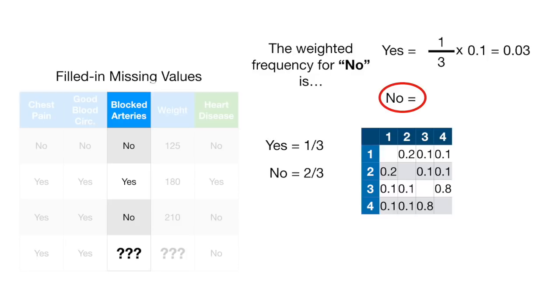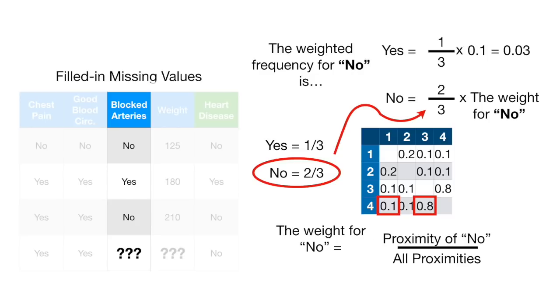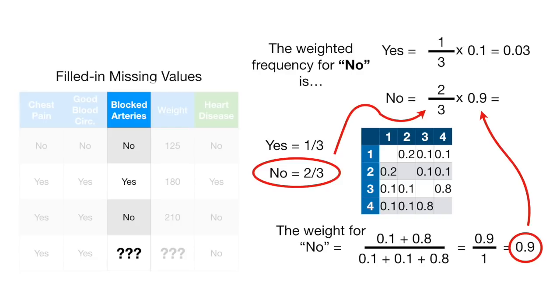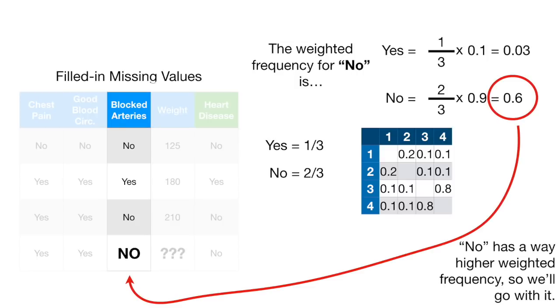The weighted frequency for no is the frequency of no, which is two-thirds, times the weight for no. Samples 1 and 3 both have no. With that in mind, we can plug in the values for the proximity of no divided by all proximities. Thus, the weight for no is 0.9. And the weighted frequency for no is 0.6. No has a way higher weighted frequency, so we'll go with it.